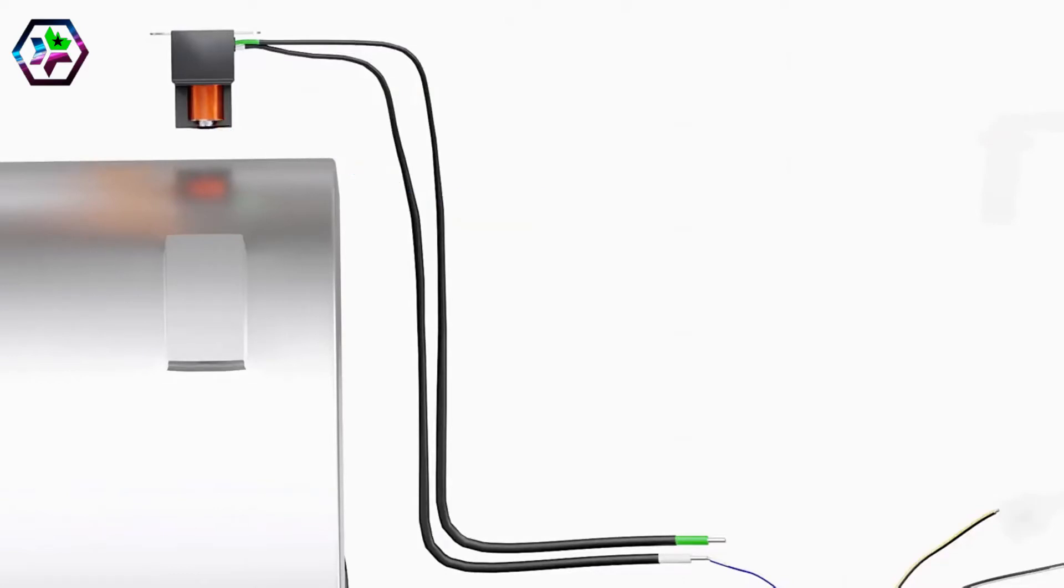The flywheel has a small extrusion on its outer surface. As this extrusion approaches and passes the pickup coil, a small voltage is developed in the coil.